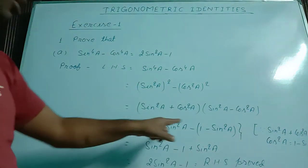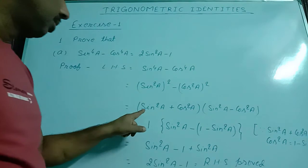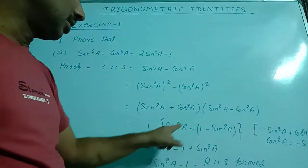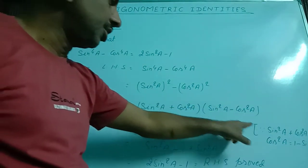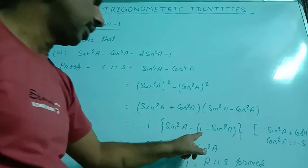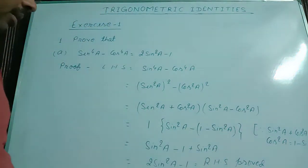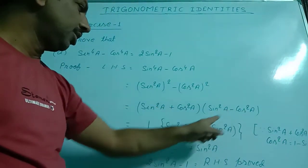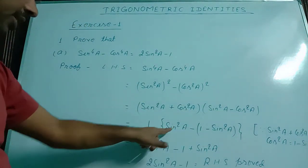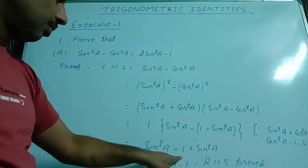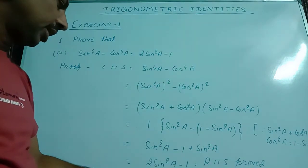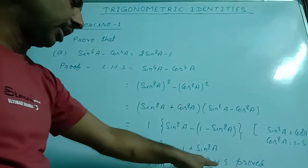So, this becomes sin square a plus cos square a into sin square a minus cos square a. We know sin square a plus cos square a equal to 1. So I have written 1 here, and sin square a minus cos square a is changed into 1 minus sin square a, because cos square a equal to 1 minus sin square a. So this becomes 1 into 1 minus sin square a. Now expanding: sin square a minus 1 and minus times minus gives plus sin square a, so sin square a plus sin square a equals 2 sin square a minus 1 — that is RHS, proved.